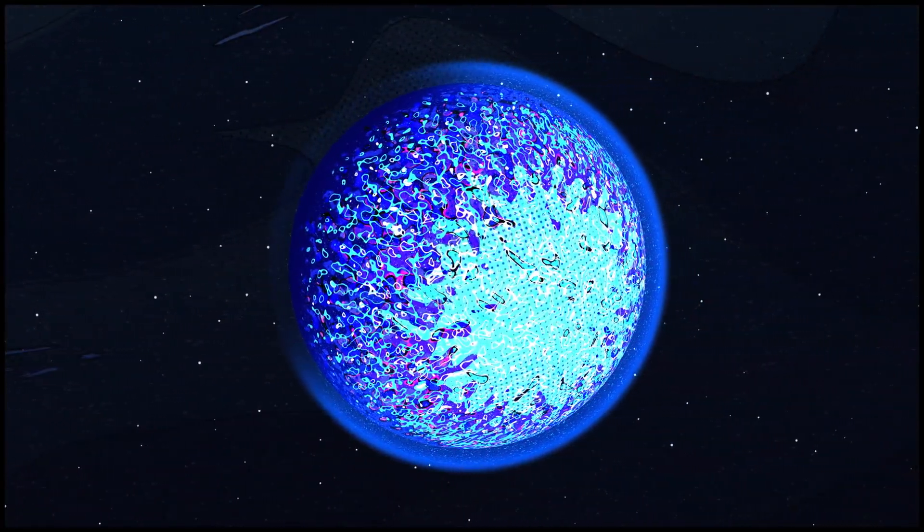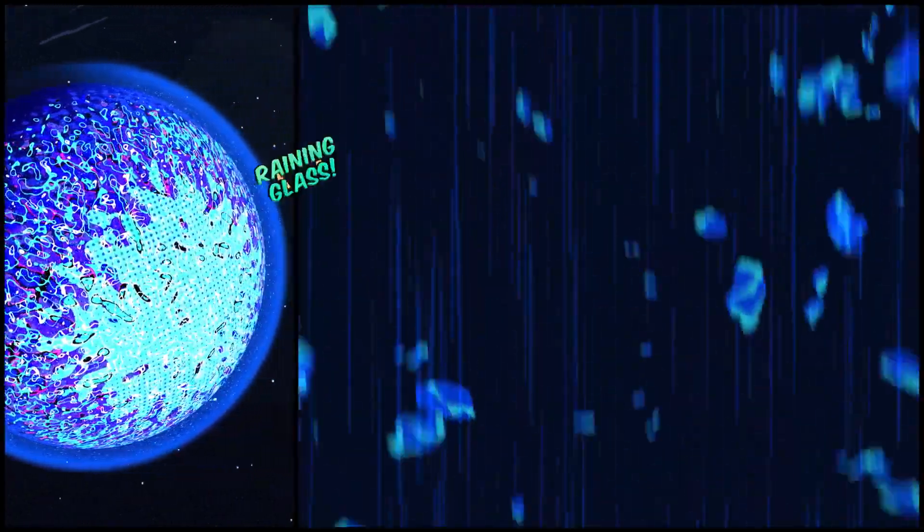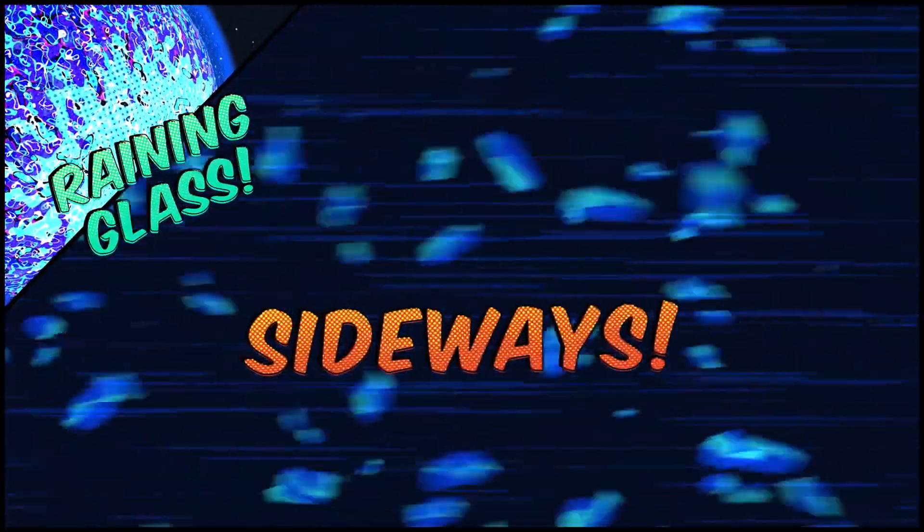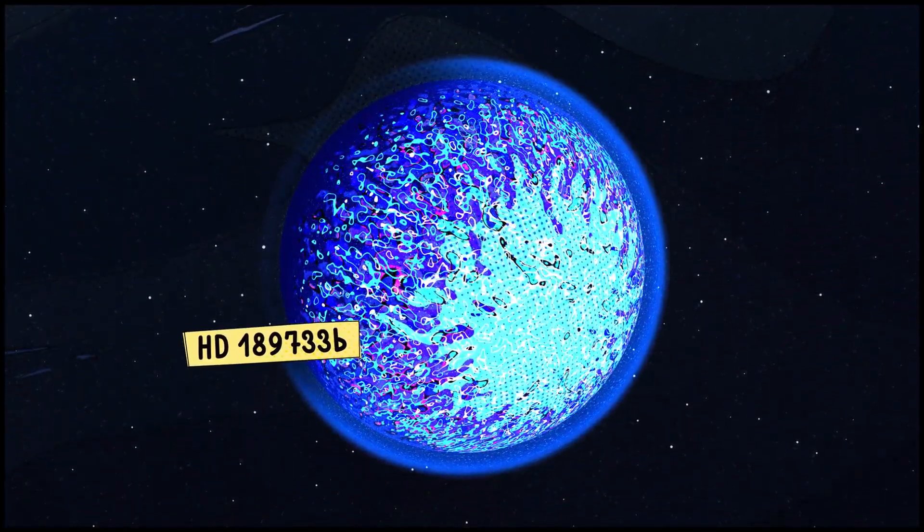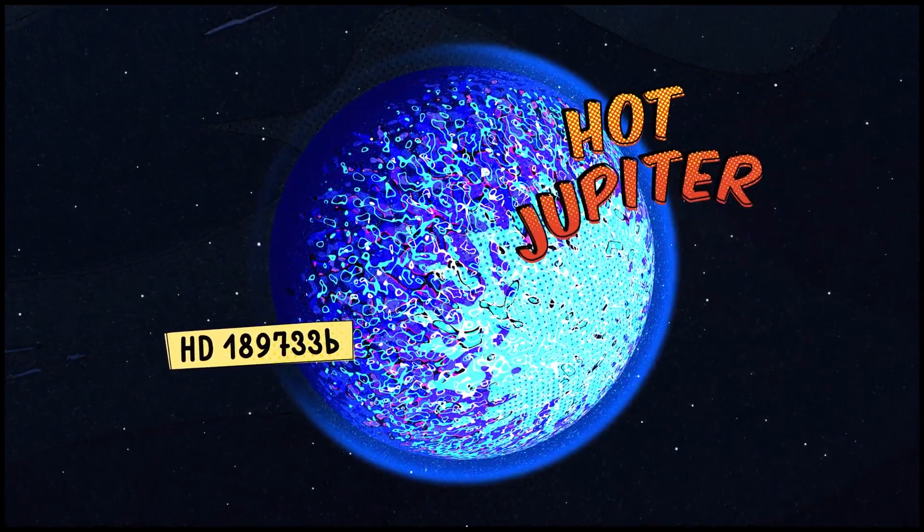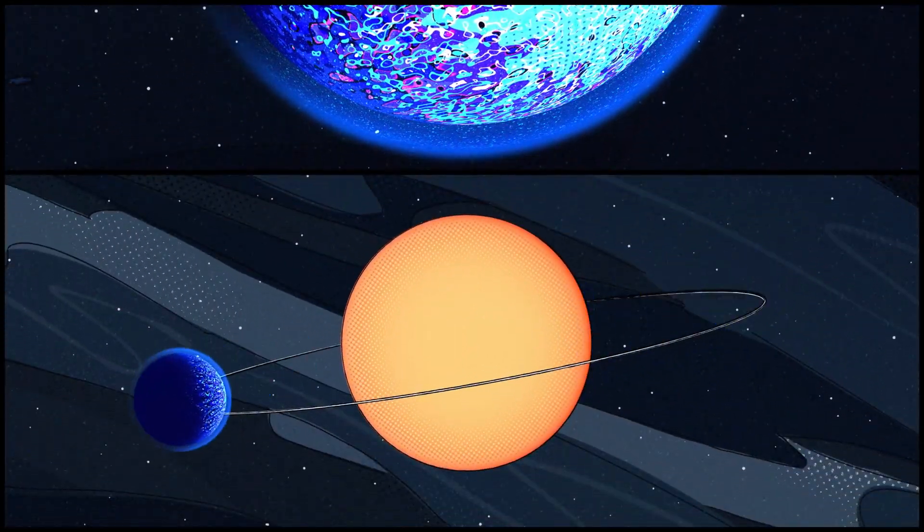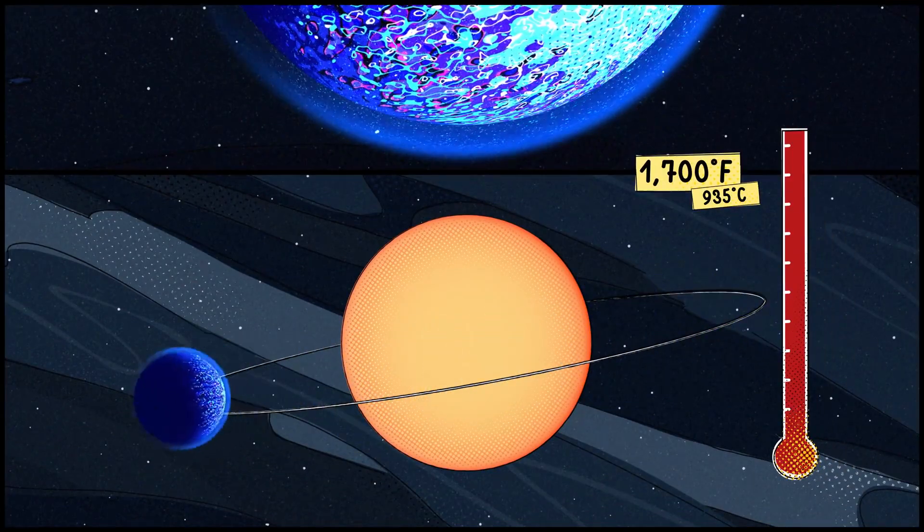High on the list of odd exoplanets to observe is a terrifying place where it might rain glass sideways. This exoplanet is called HD 189733 b, and it's a hot Jupiter, a giant, gaseous world that hugs its star in such a tight orbit that its temperature is more than 1,700 degrees Fahrenheit.